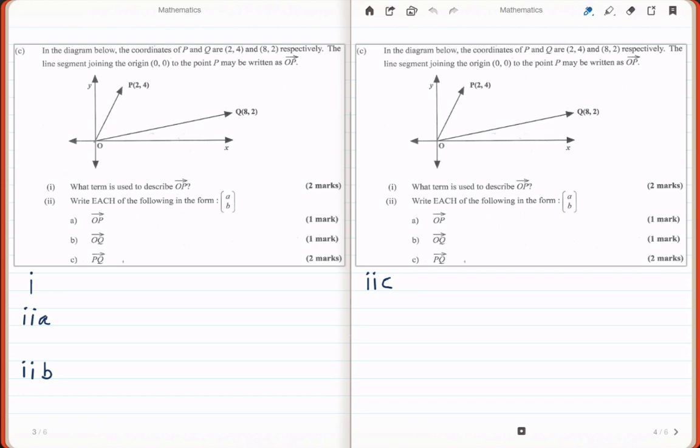And if you're coming from the origin O to a new location P, then you have changed your position. So OP is actually what we call a position vector.